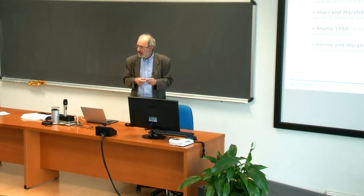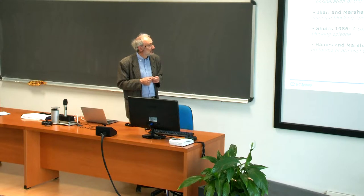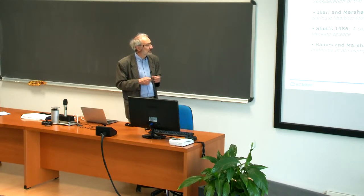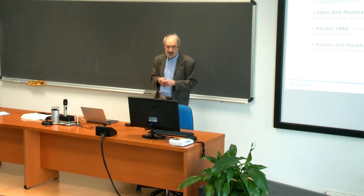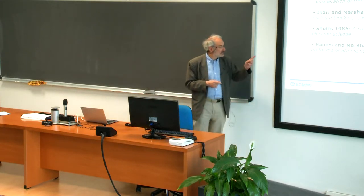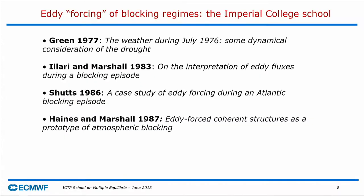This concept was developed in a number of subsequent papers. The work done in 1987 with Kit Heinz actually showed how a modon structure — a stationary solution of the flow — can be seen as a prototype of a blocking dipole, and can be maintained against dissipation by the eddy vorticity flux from baroclinic transients.